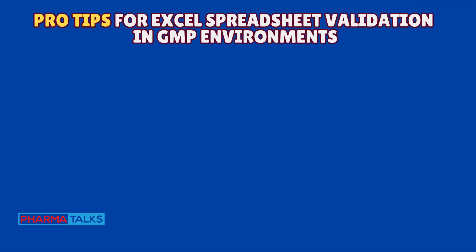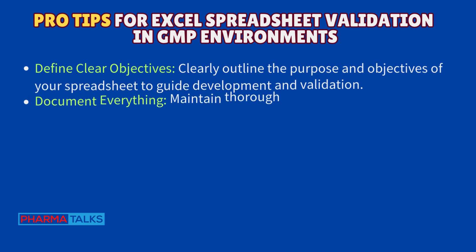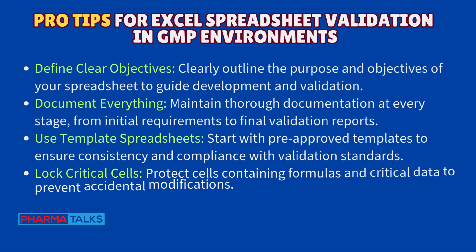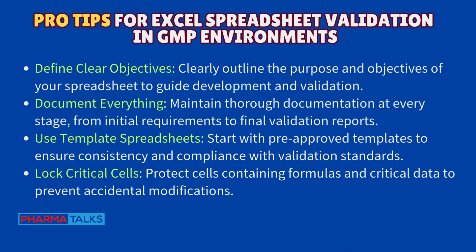Pro tips for Excel spreadsheet validation in GMP environments. Define clear objectives — clearly outline the purpose and objectives of your spreadsheet to guide development and validation. Document everything — maintain thorough documentation at every stage, from initial requirements to final validation reports. Use template spreadsheets — start with pre-approved templates to ensure consistency and compliance with validation standards.